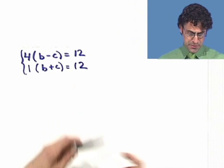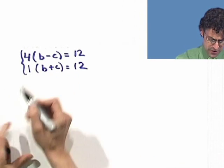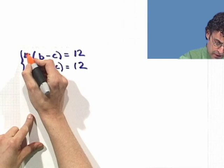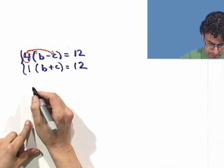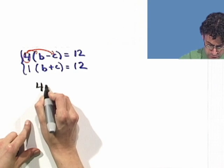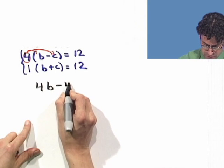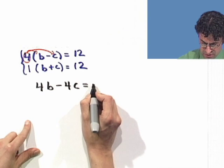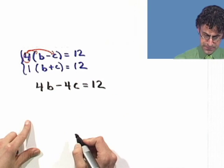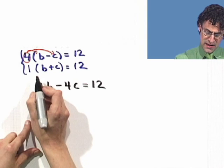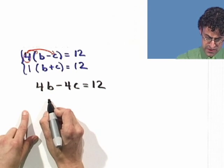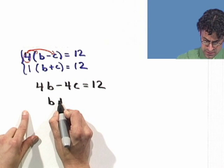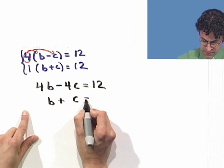Let's first of all distribute the four in the top equation. And if we distribute that four to the b and to the c, what we see here is 4b minus 4c equals 12. And then, here, I just have the simple equation, well, 1 times anything is anything. So I have b plus c equals 12.